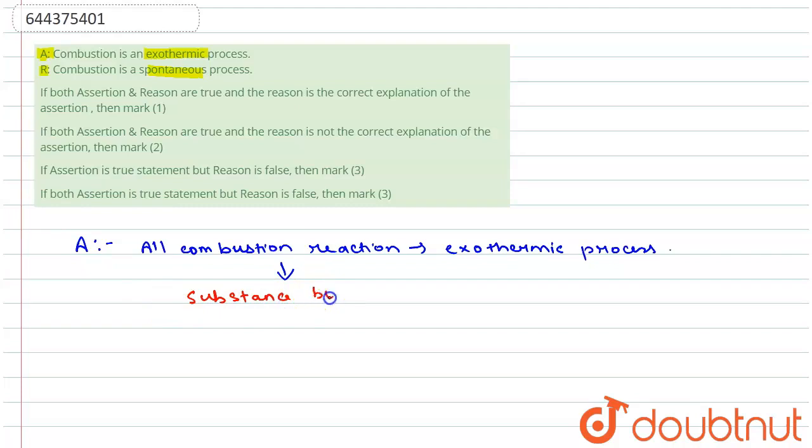The substance burns as it combines with oxygen. So when substances burn, they usually give off energy as heat and light. So yes, this is an exothermic process. Now coming to the reason part, that combustion is a spontaneous process.